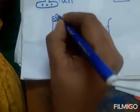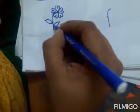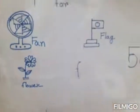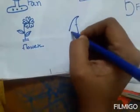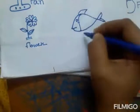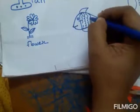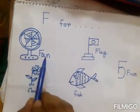Now I'm drawing a flower. Flower starts with F — F-L-O-W-E-R, flower, with small letter f. Now I'm drawing a fish. Fish starts with F — F for fish. To review: F for fan, F for flag, F for five, F for flower, and F for fish — F-I-S-H, fish.